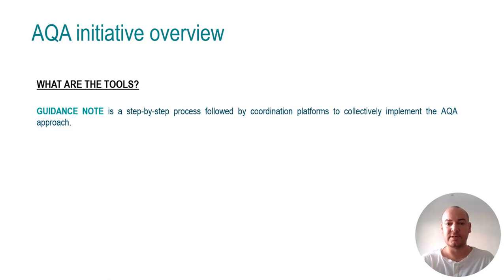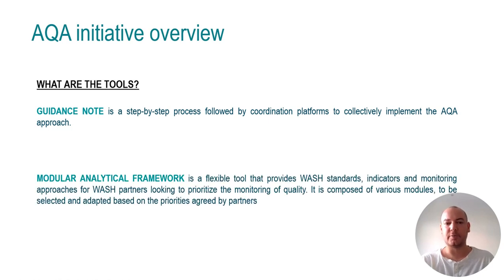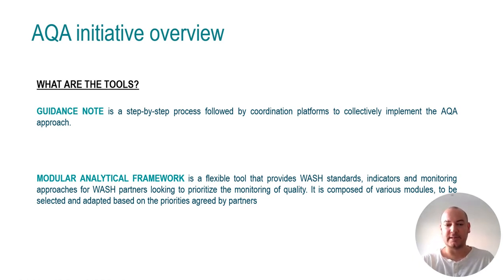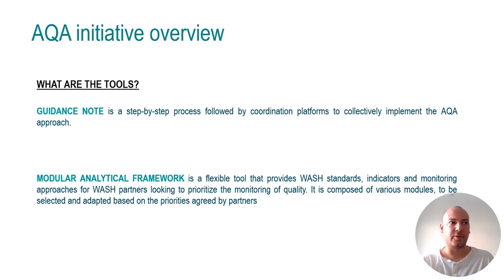So what are the tools of the AQA initiative? We have two key documents. The first key document is the guidance notes, which is a step-by-step process to be followed by the coordination platform to collectively implement the AQA approach. And we have the Modular Analytical Framework, a flexible tool that provides WASH standards, indicators, and a monitoring approach for WASH partners looking to prioritize the monitoring of quality. It is composed of four modules that have to be selected and adapted based on the priorities agreed by partners.